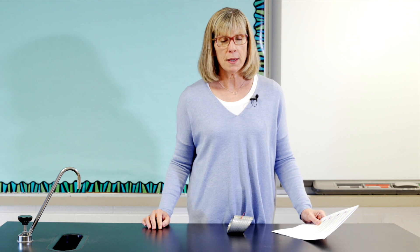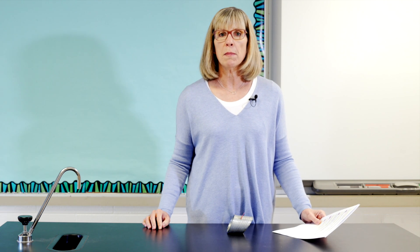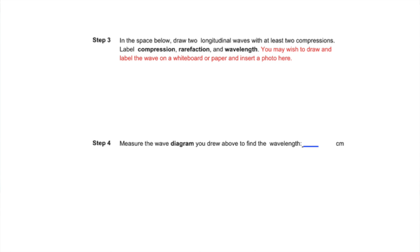Turn now to step 3 in the middle of slide 4. Draw the wave described in the directions onto a whiteboard, piece of paper, or directly into the slide and label the parts as directed. Then measure the wavelength in your diagram as indicated in step 4 and fill in the blank.